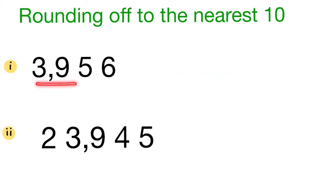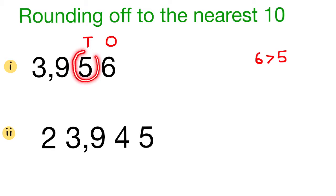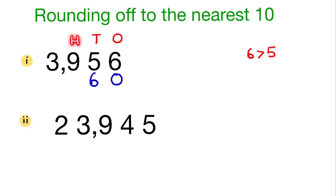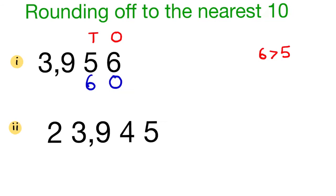Next number: 3,956. The digit in the ones place is 6 and the digit in the tens place is 5. Since 6 is greater than 5, we add 1 to the digit in the tens place. The digit in the tens place is 5, so 5 plus 1 is 6. We write 6 in the tens place. Since we are rounding to the nearest tens, we write 0 in the ones place. The digits in the hundreds and thousands place do not change — we write 9 in the hundreds place and 3 in the thousands place. So, 3,956 is rounded off to 3,960.